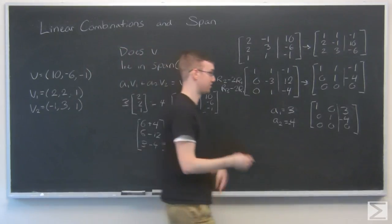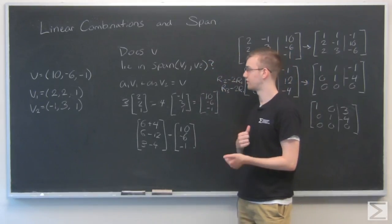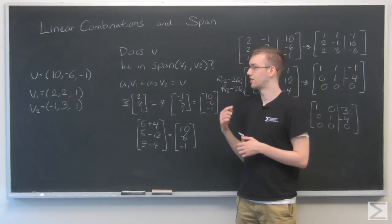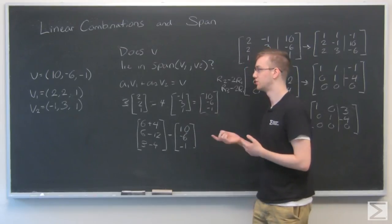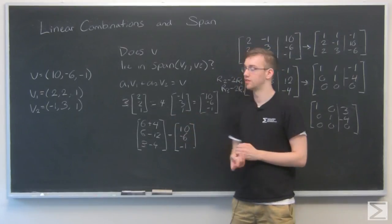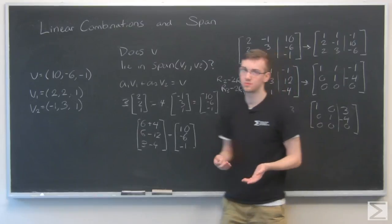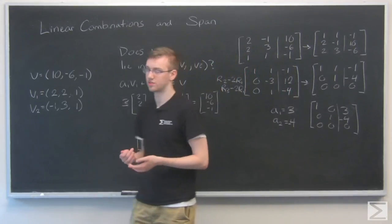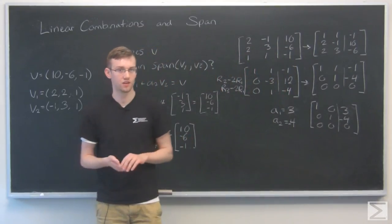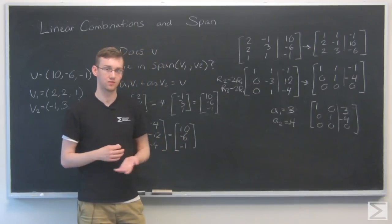So aside from a few computational difficulties, that's how you would go about verifying whether a certain vector lies in the span of two other vectors. We just look at the linear combination of those two vectors and solve for our unknown. So I hope this makes the concepts of linear combinations and span make a little bit more sense to you. We'll definitely be talking about them more in future videos. So that's all we have to say for this lecture.